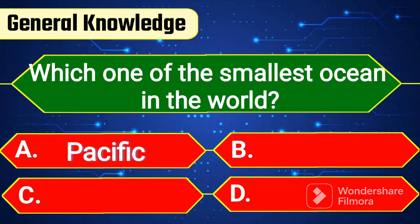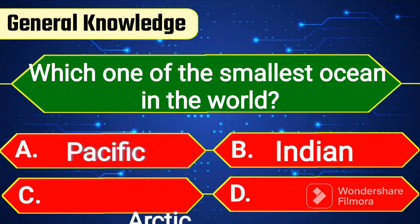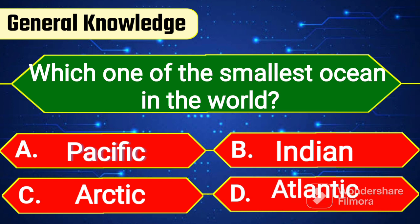Which one is the smallest ocean in the world? Option A: Pacific. Option B: Indian. Option C: Arctic. Option D: Atlantic.